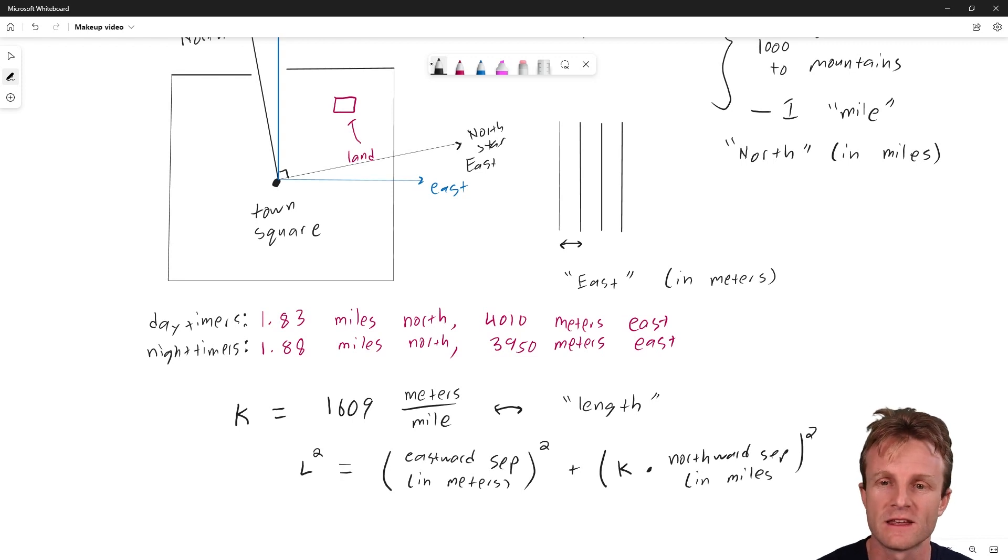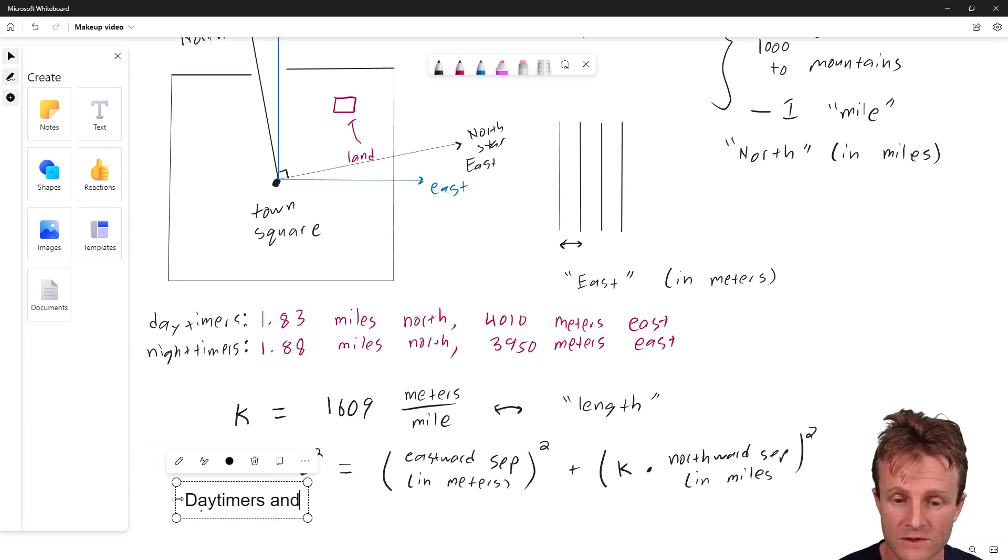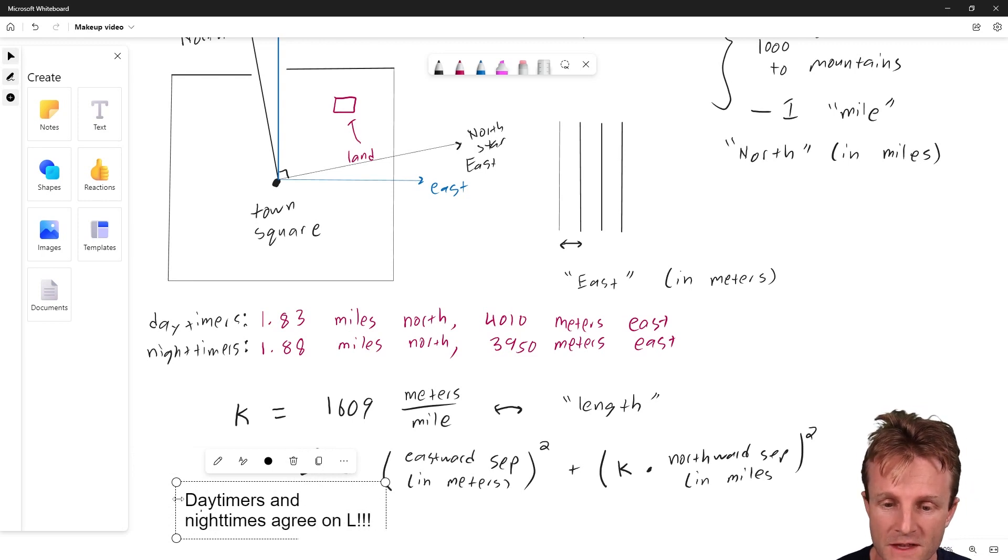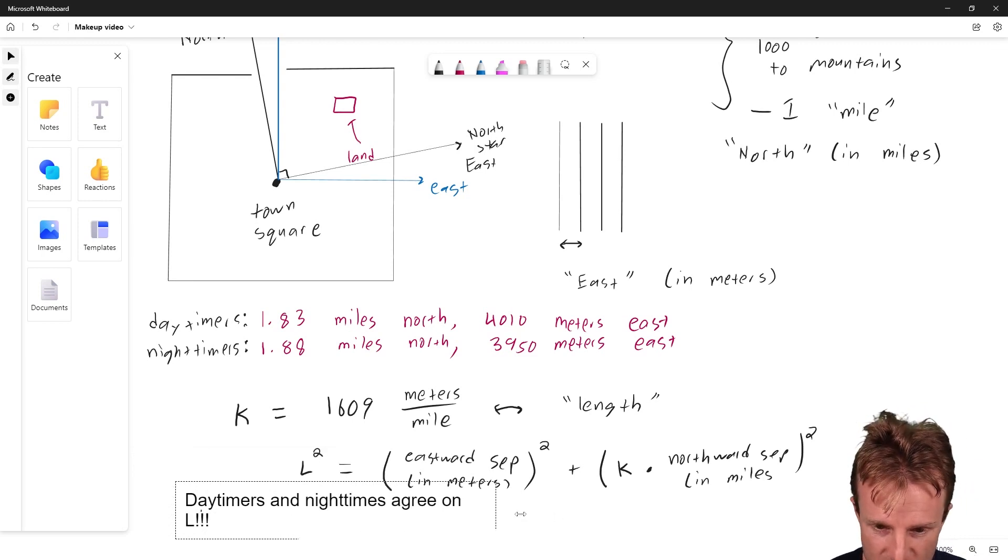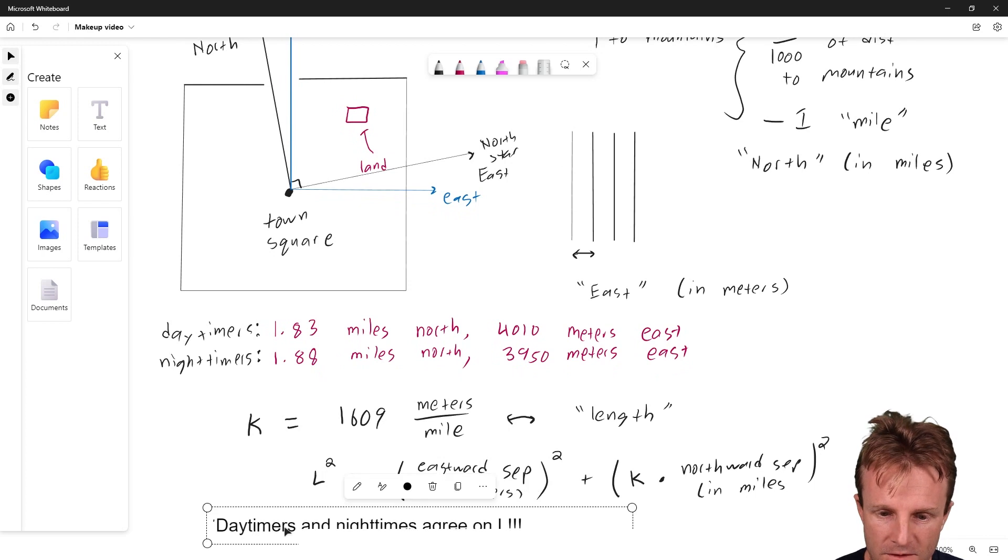It was the following. L squared is the eastward separation in meters, because eastward is always in meters, of course. L squared plus, and here's where the constant comes in, K times the northward separation, which is of course in miles, because that's the natural unit for north squared. And this is a new quantity length. And the amazing thing about length that she discovered, and then was borne out exactly, was that the day timers and the night timers agree on length. Day timers and night timers agree on L. And that really deserves a triple explanation point because it prevented a war and so forth.